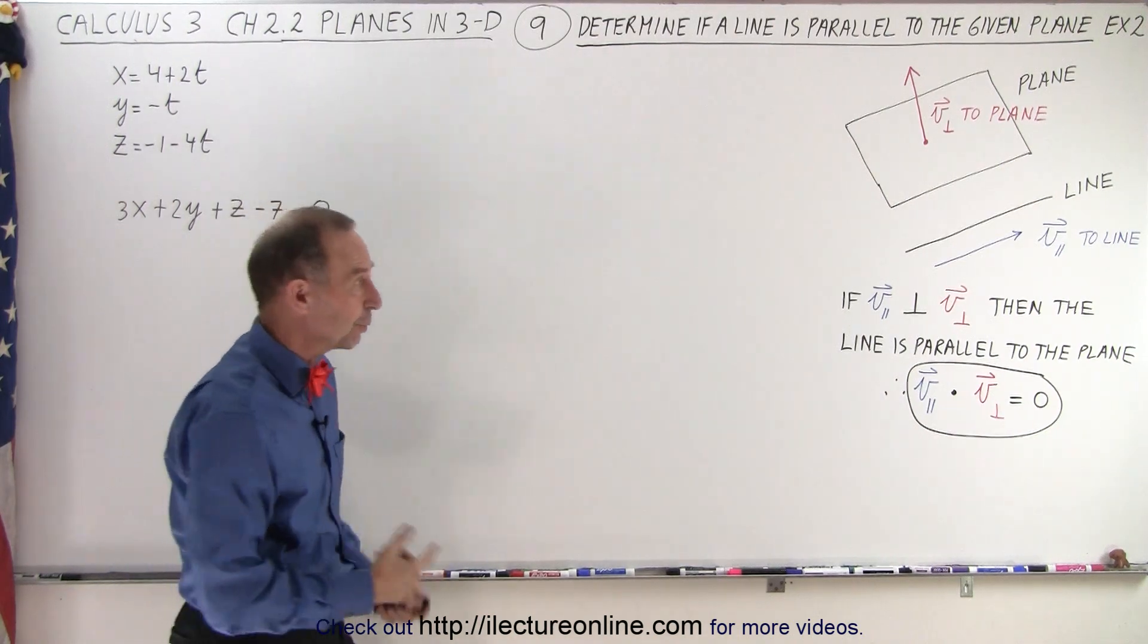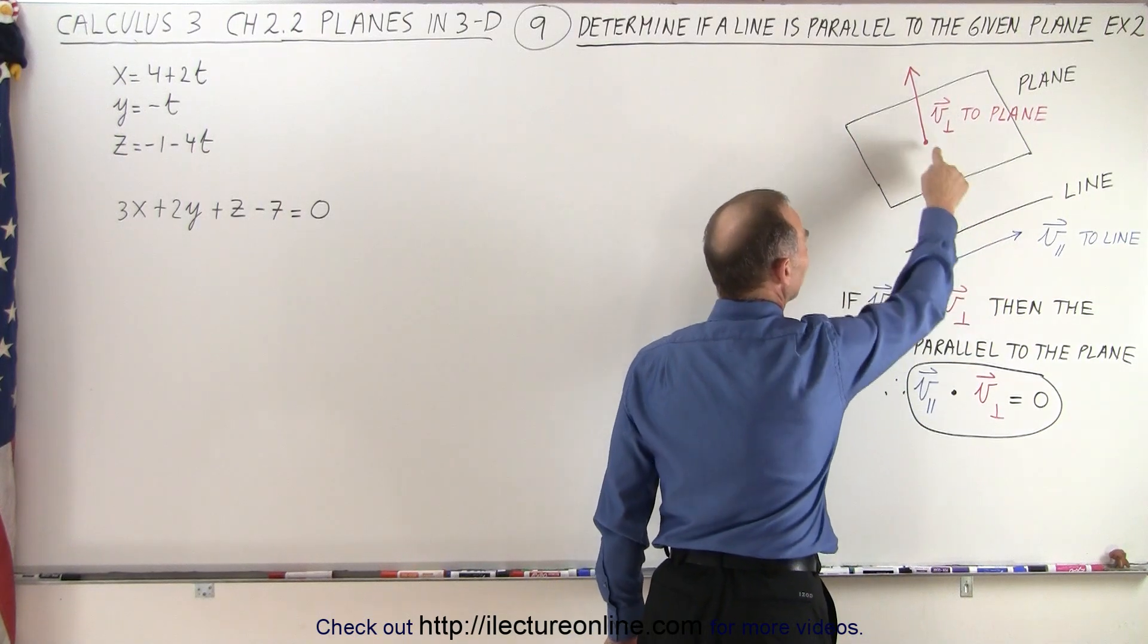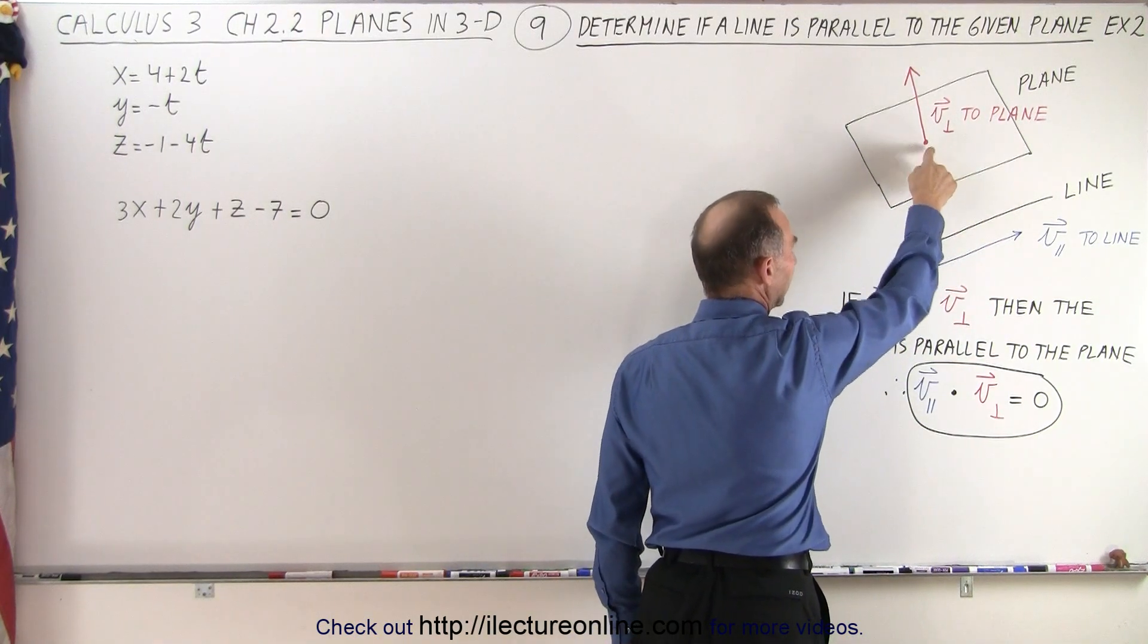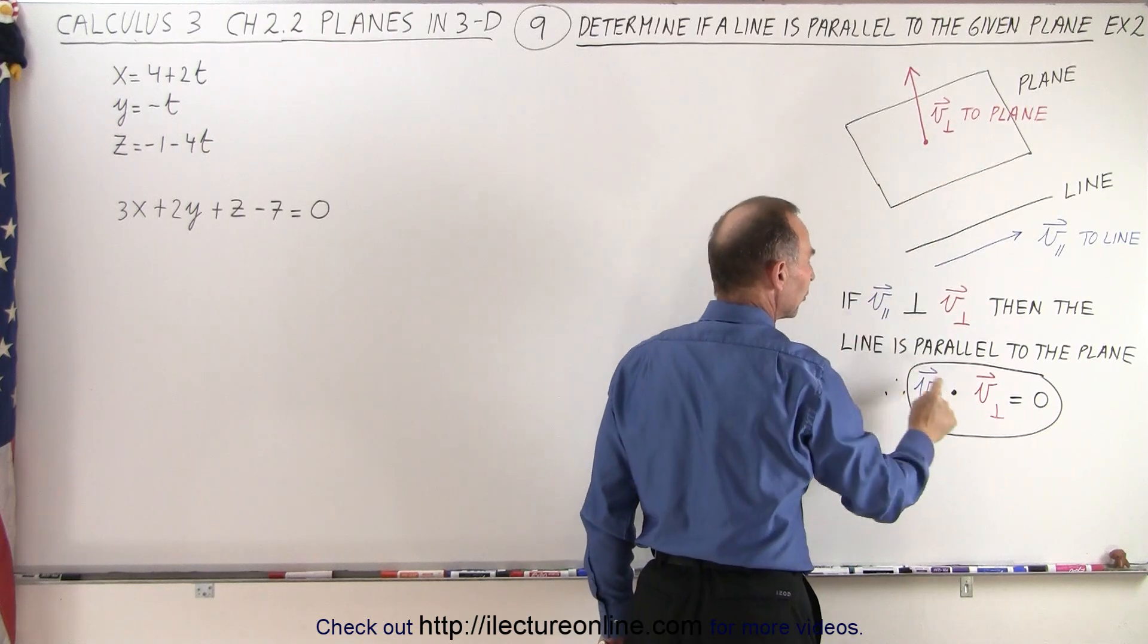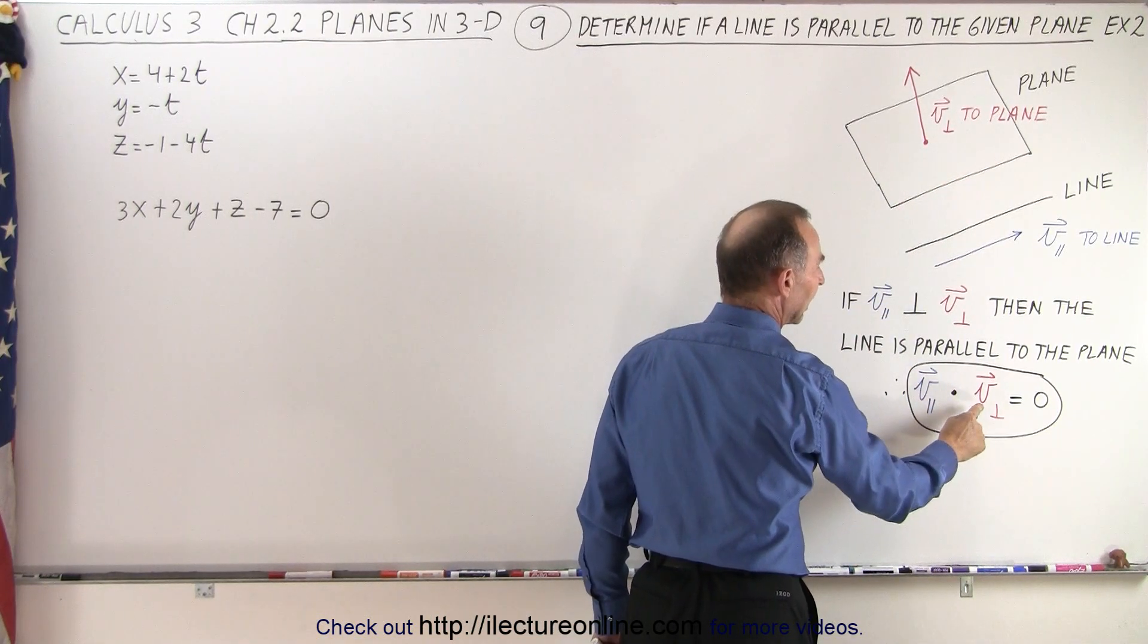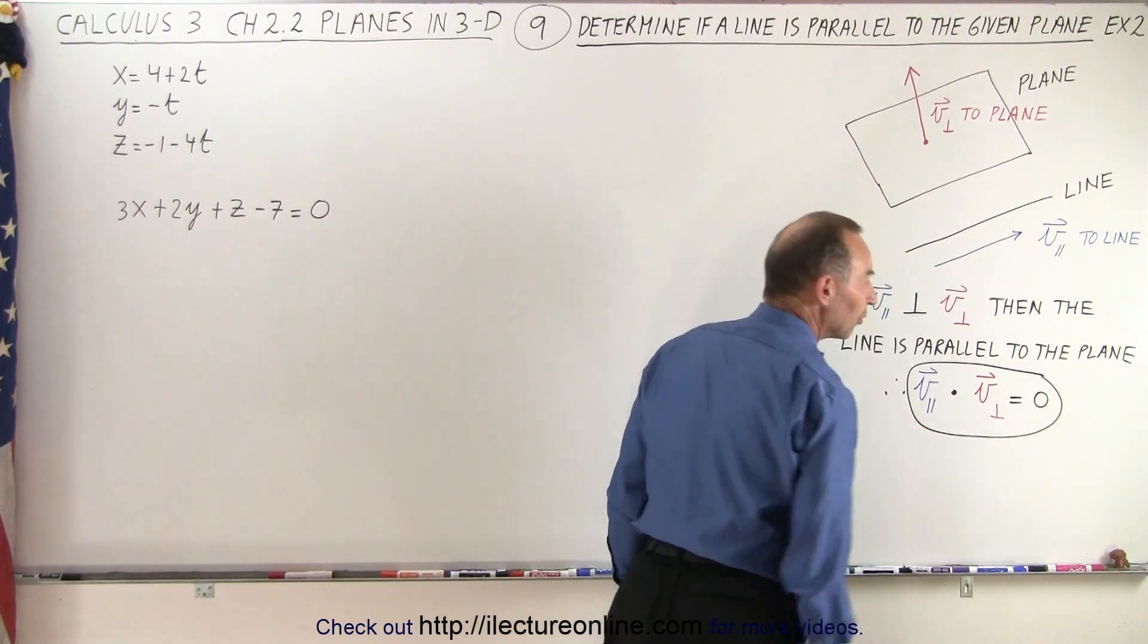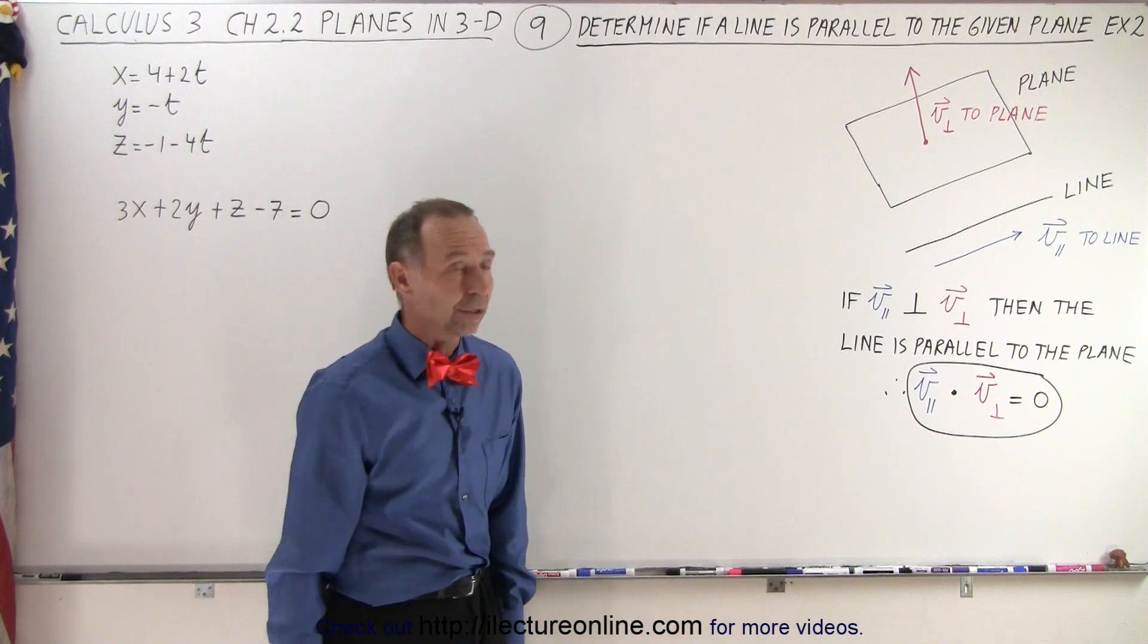Just like in the previous video, we realized that if we get the vector that's parallel to the line and the vector that's perpendicular to the plane, the line will be parallel to the plane if the dot product between the parallel vector to the line and the perpendicular vector to the plane equals 0. So that's what we're going to try to determine.